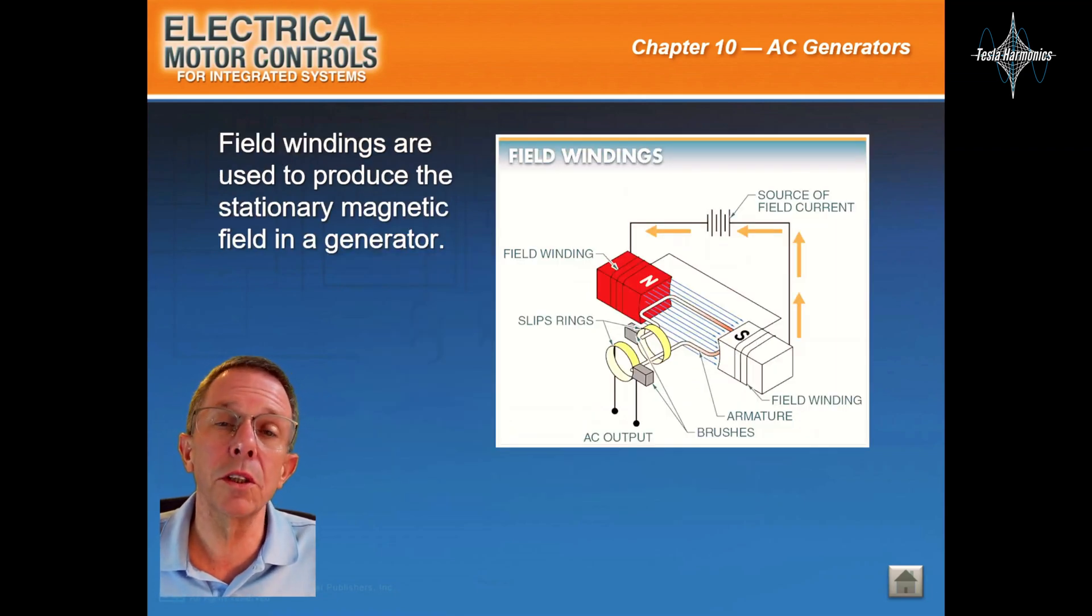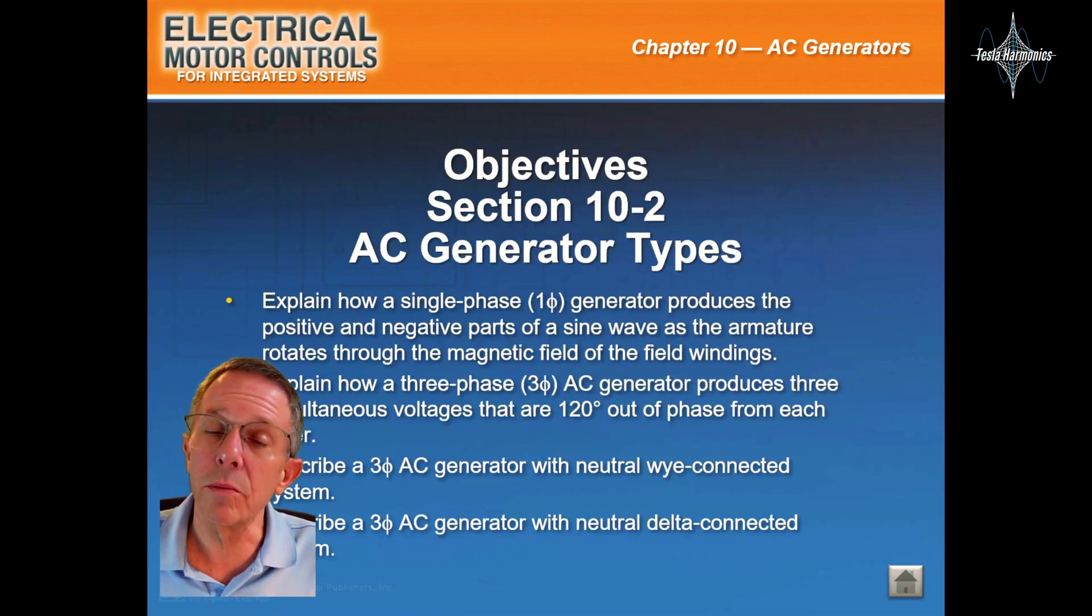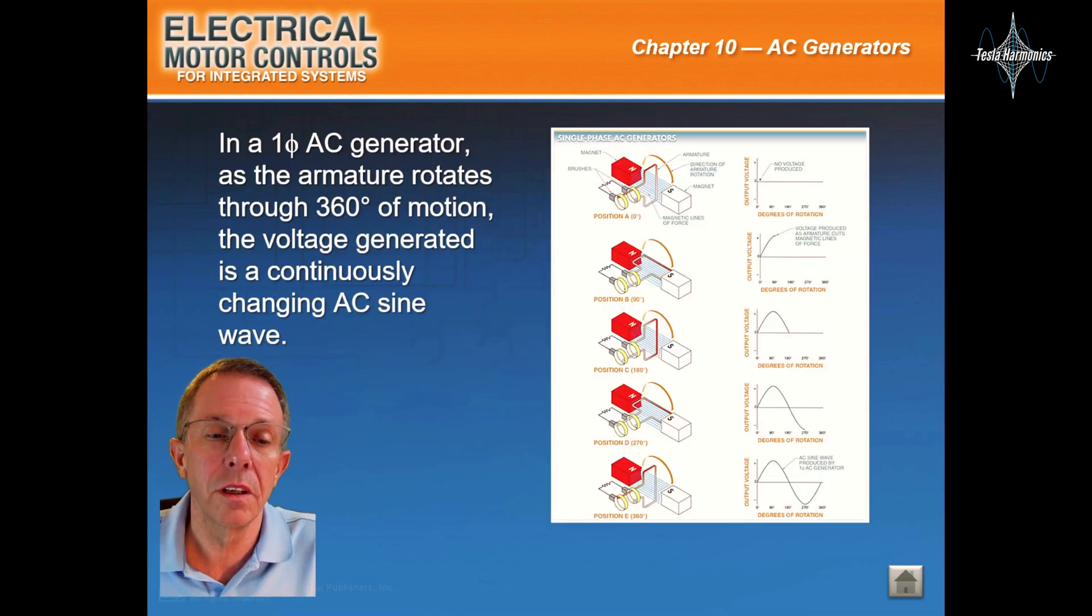Field windings are used to produce the stationary field in a generator. This will be AC generator types. In a single-phase AC generator, as the armature rotates through 360 degrees of motion, the voltage generated is a continuously changing AC sine wave.